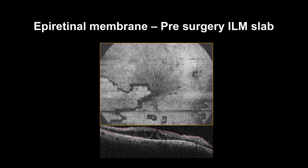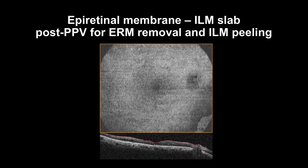This is the ILM slab of epiretinal membrane pre-pars plana vitrectomy. Please note the epiretinal membrane distribution and attachments, along with segmentation and blink artifacts. The ILM slab will show changes post-surgery to assess structural outcomes. A post-operative EnFace can show several dimples due to dissociated optic nerve fiber layer 30 days post-surgery at the macular area that underwent ILM peeling.